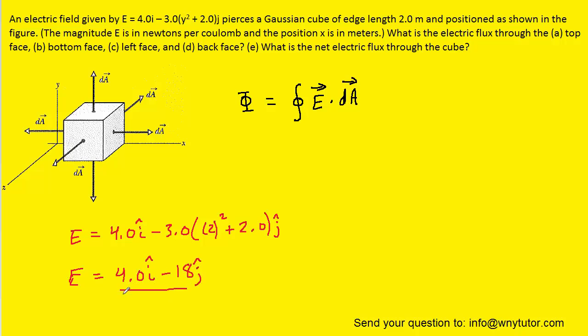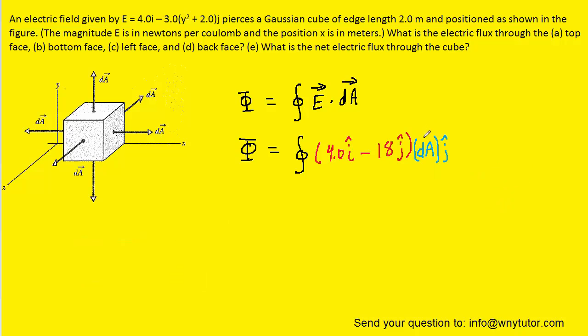Once we have the electric field flowing through the top surface of the cube, we can plug that into our integral. We want to make a note about this differential area vector. Since we're calculating the electric flux through the top surface of the cube, this dA term is simply going to equal dA j-hat, because the dA vector is pointing in the positive y-direction.